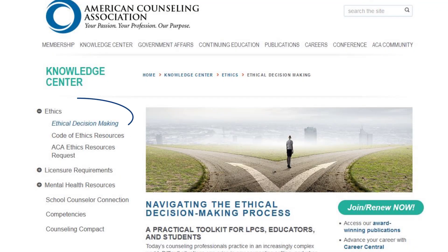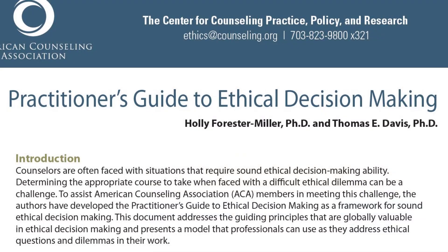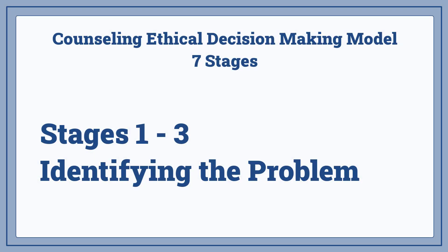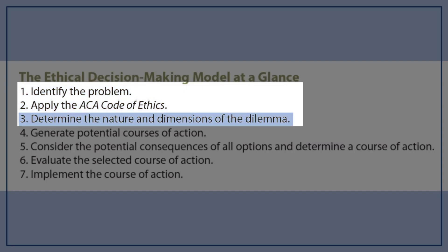Let's cover the first one that we have access to right through the American Counseling Association — it's a seven-stage model designed by Foster, Miller, and Davis. Steps one through three are identifying the problem. They break it down to: identify the problem, apply the ACA Code of Ethics, and determine the nature and dimensions of the actual dilemma.